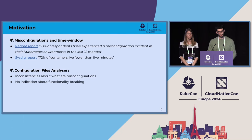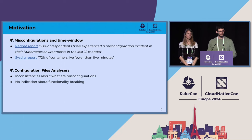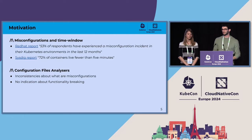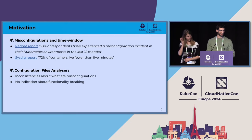At the beginning we started this work saying: because we have this very limited time window at runtime, let's see how much we can improve before reaching runtime, so at static time. The other reason is that there are a lot of tools that can analyze configuration files and charts. However, there are some inconsistencies between the output of such tools, and also there is no indication about whether a configuration might break the functionality of your application.